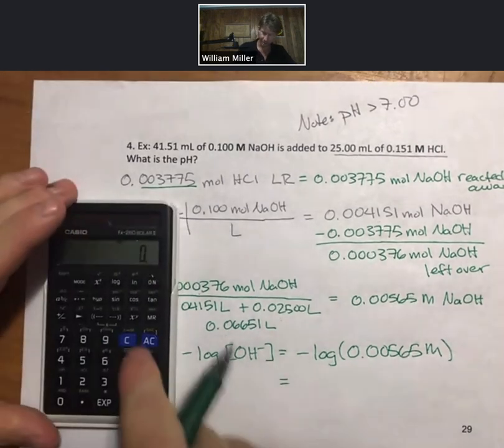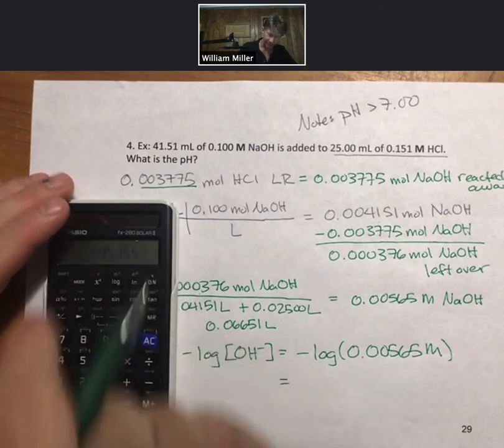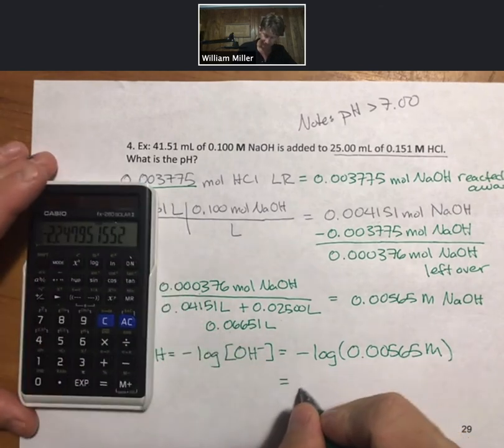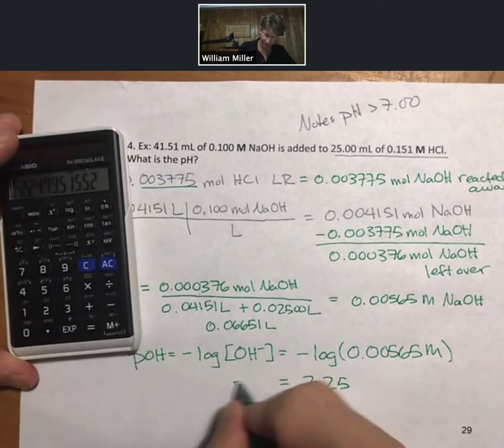And again I always put the numbers on the page and then I hit log, minus log, take the minus away, 2.25 is my pOH.